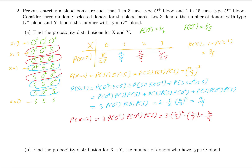Similarly, we can find the probability distribution for Y. Instead of O plus, we use O minus. The structure is the same, but the probability of O minus is 1/15, and therefore the probability of S for Y equals 1 minus 1/15 equals 14 over 15. These are the values you use for the distribution of Y.